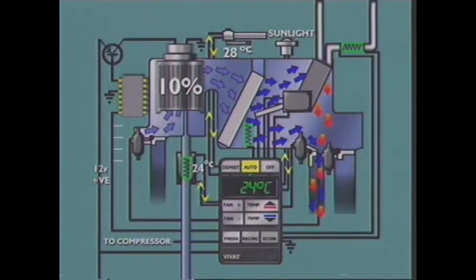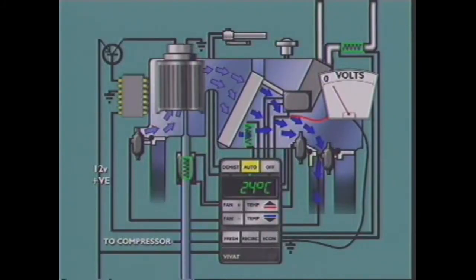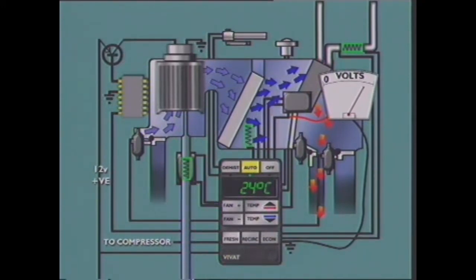A voltage from the electronic control unit is applied across the potentiometer, and the wiper is connected by the signal wire to the ECU. For maximum cooling effect, the blend door is moved to stop airflow through the heater core — in this position the voltage signal back to the control unit is at its lowest value. As the blend door is moved to allow airflow through the heater core, the voltage at the signal wire progressively increases until, at the maximum heat position, the voltage signal is at its highest. The control unit is thus aware of the blend door position, movement, and direction of travel.